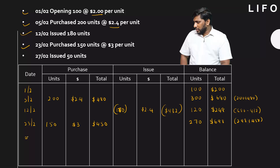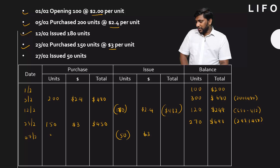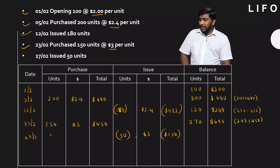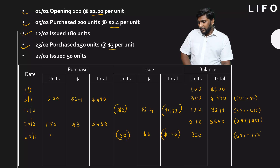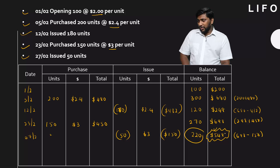On 27th February, you are going to issue 50 units. Ask yourself: what's the material I received last? It is the $3 worth material. So 50 units at $3 = $150 issued. You had 270 units; after issuing 50, the balance is 220 units. Your inventory value before the issuance was $698; deduct $150, giving a balance of $548. So at end of the period, 220 units remain with a value of $548.